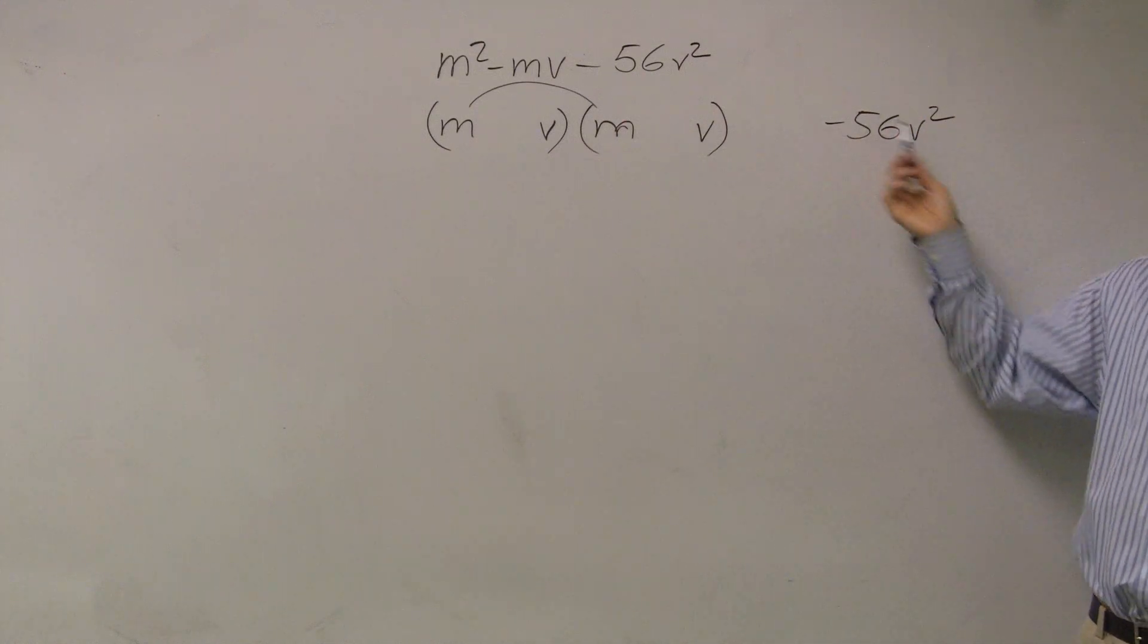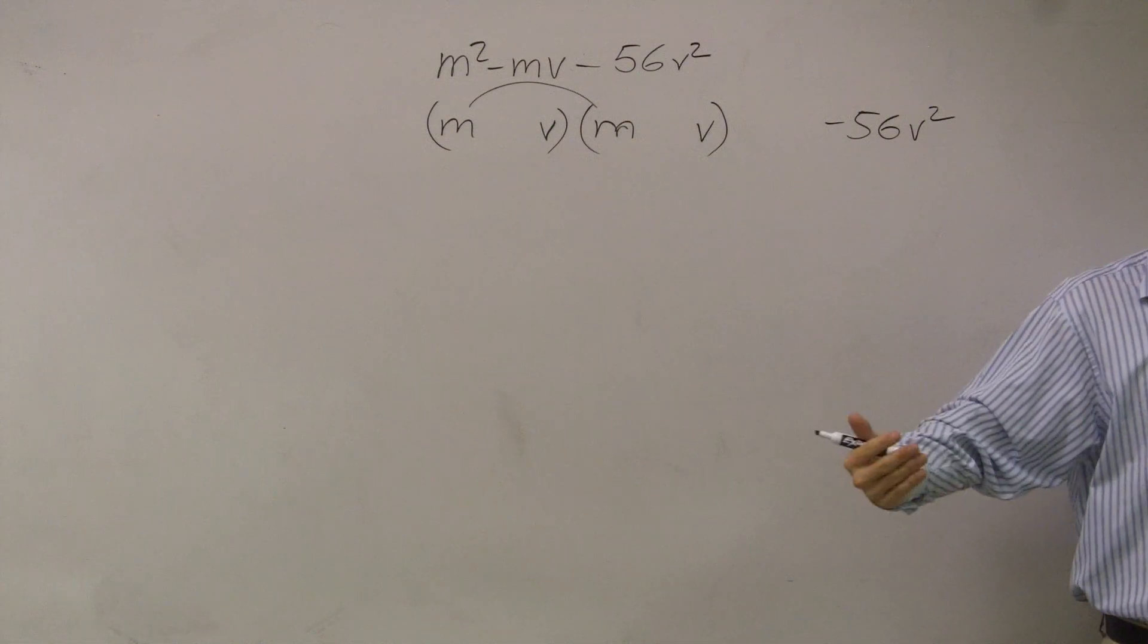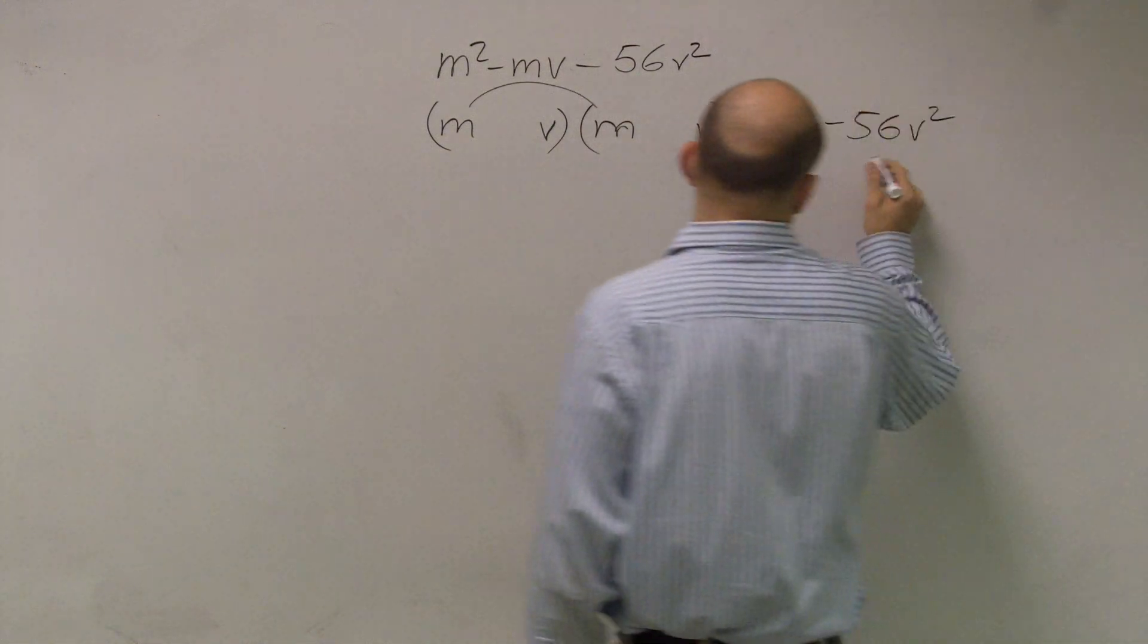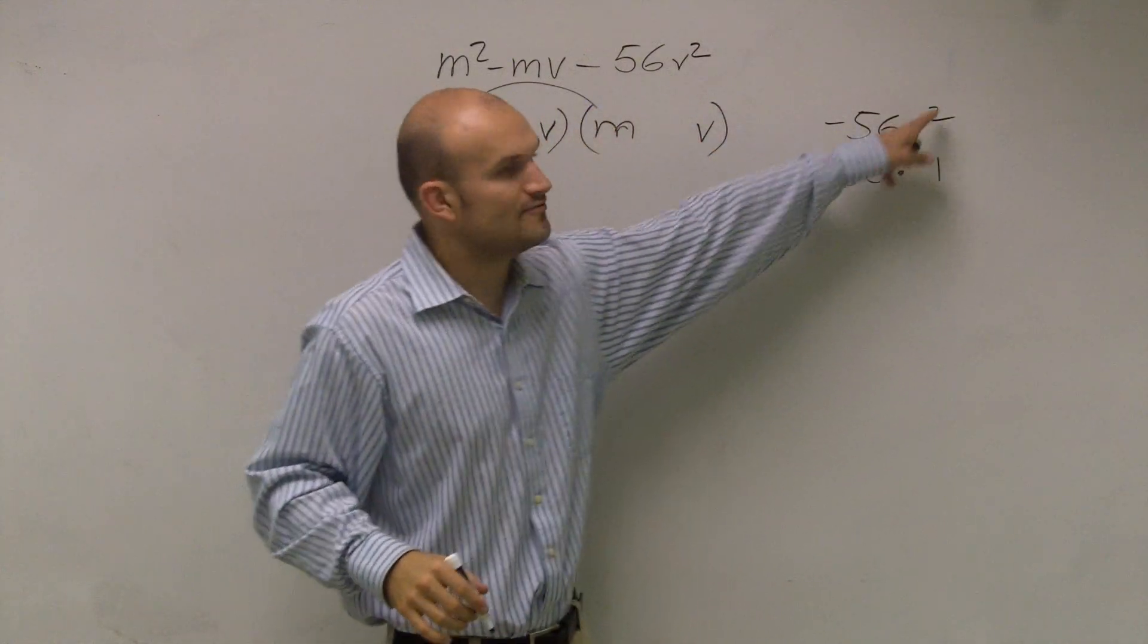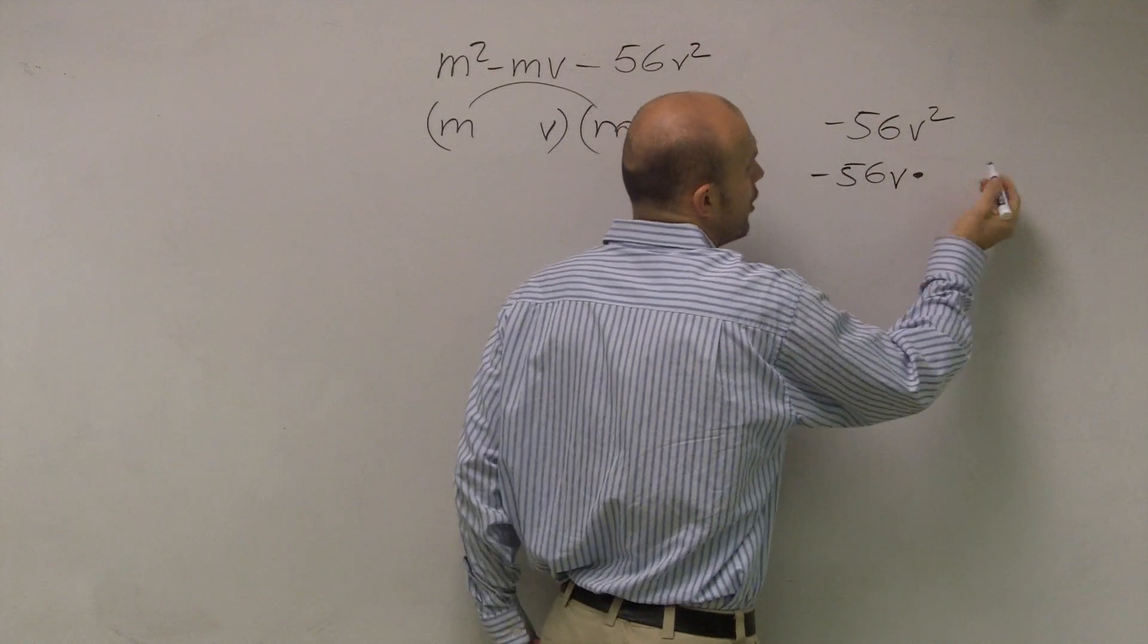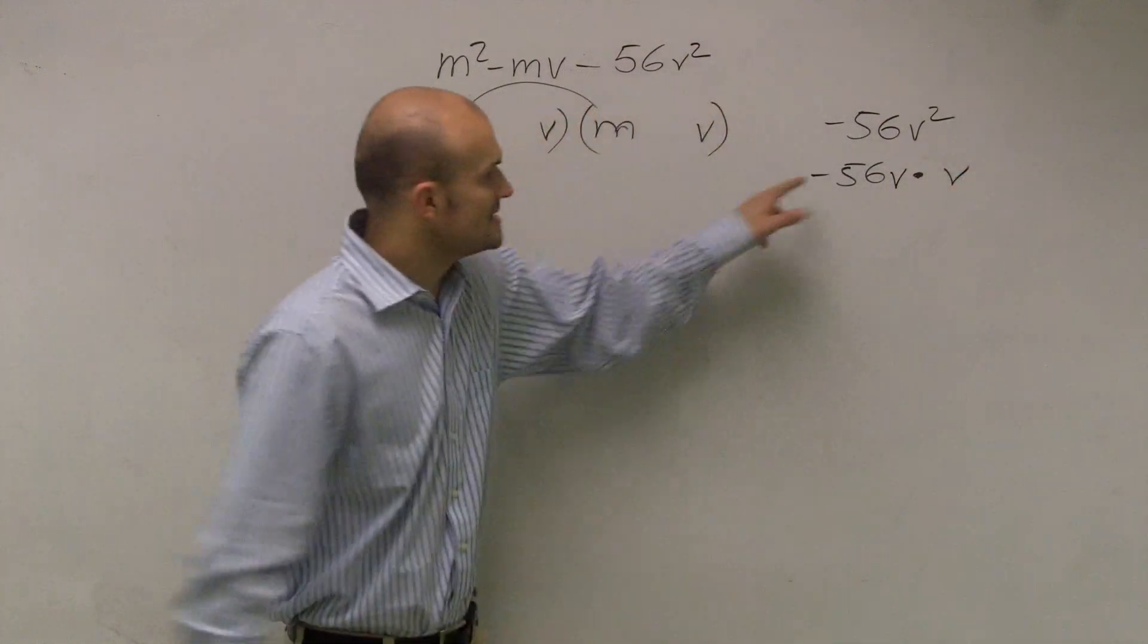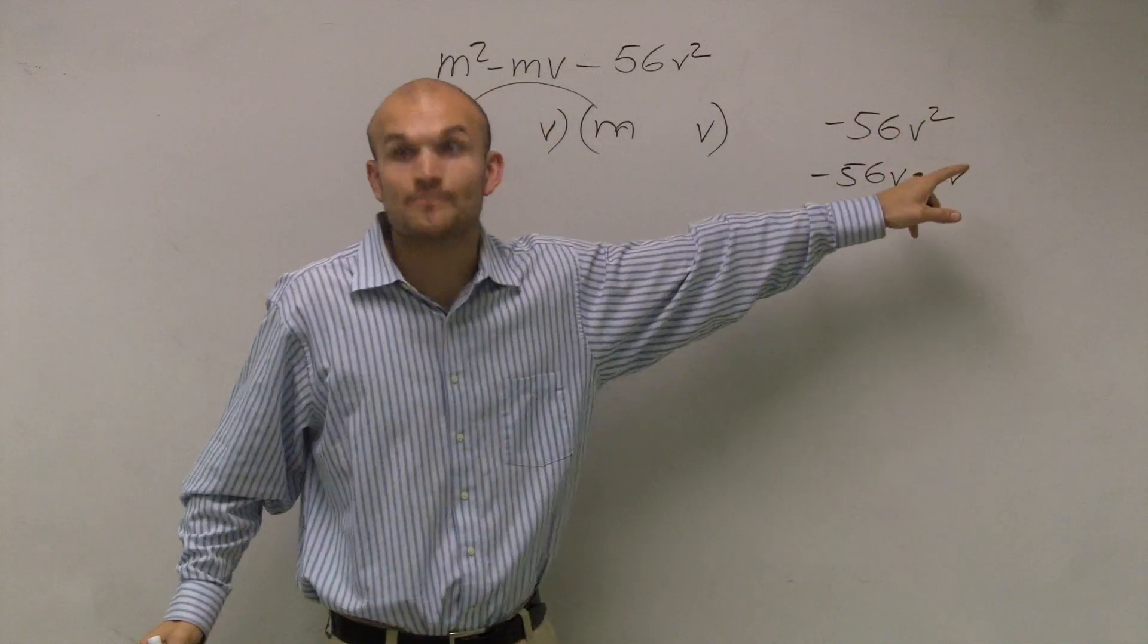Right? So I'm not going to write just negative 56 times 1. But now it's v squared. So I'm going to write negative 56v times 1v or v. Does negative 56v times v equal negative 56v squared? Yes, it does.